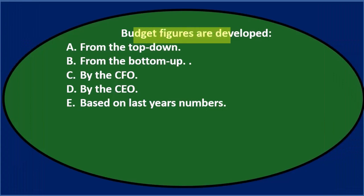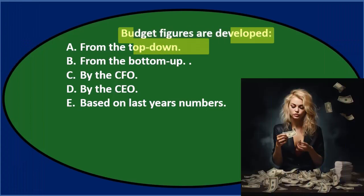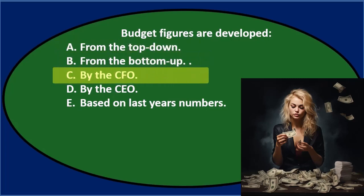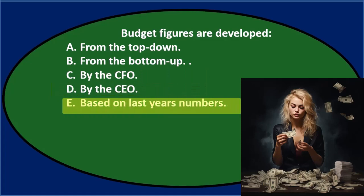First question: budget figures are developed A, from the top down, B, from the bottom up, C, by the CFO, D, by the CEO, E, based on last year's numbers. Let's go through this using the process of elimination.